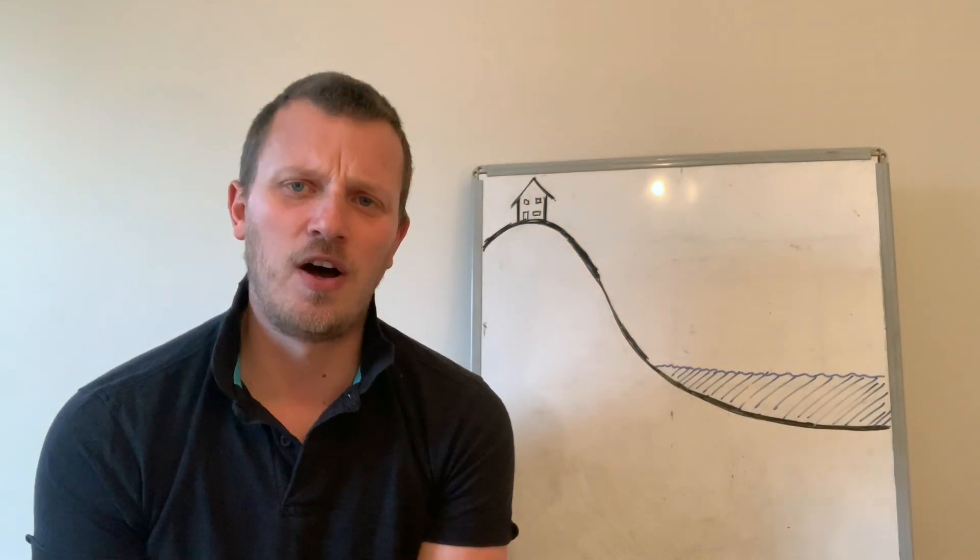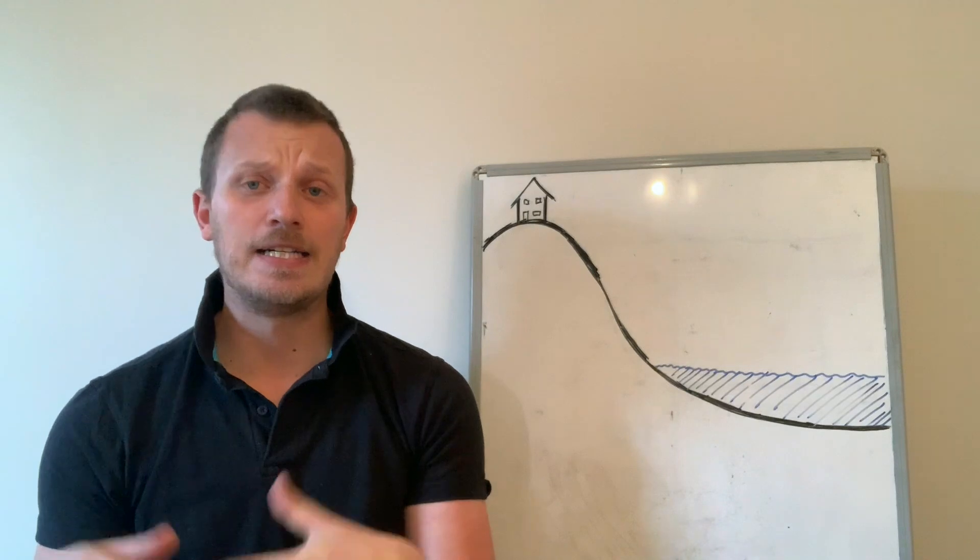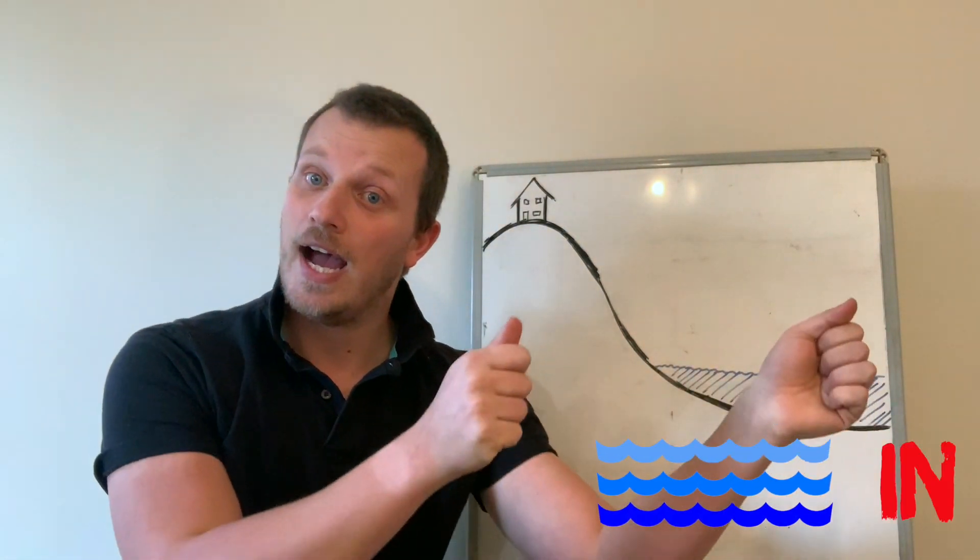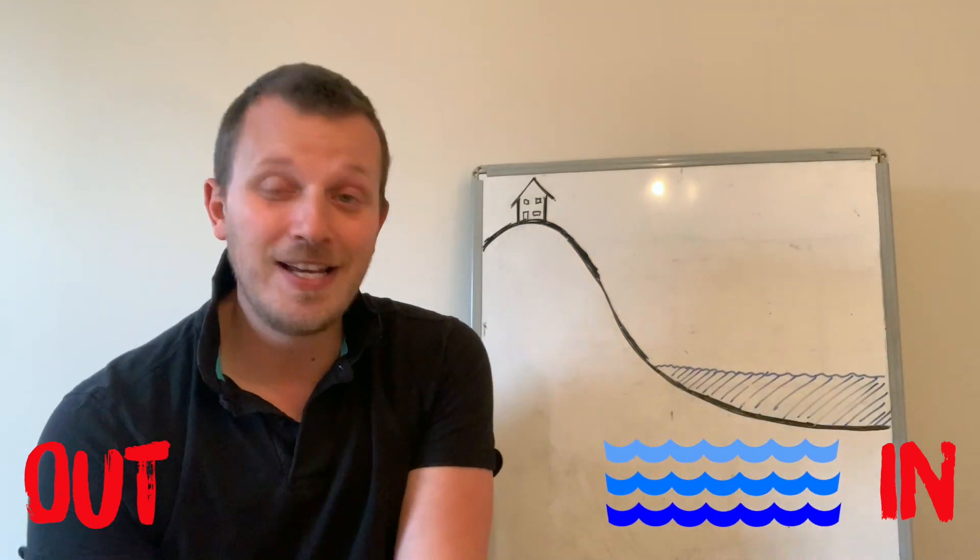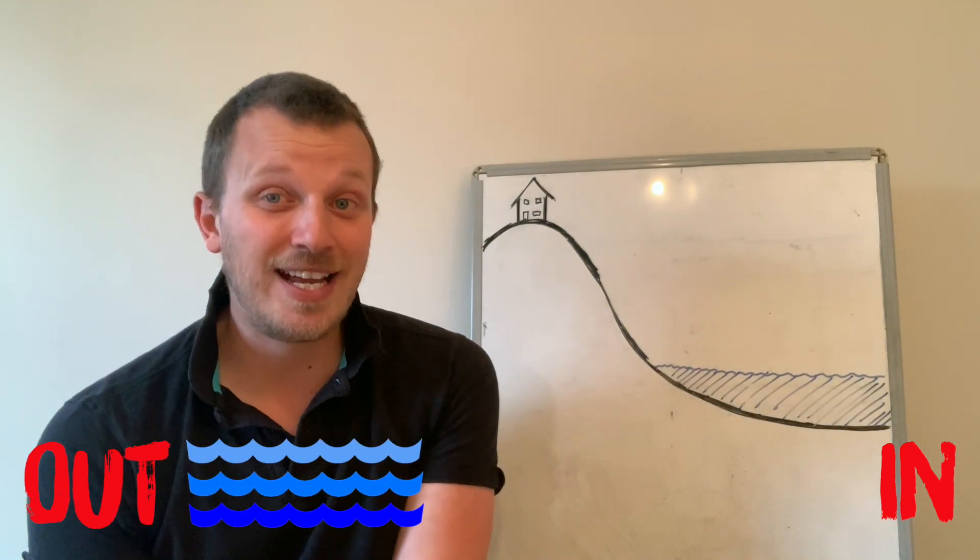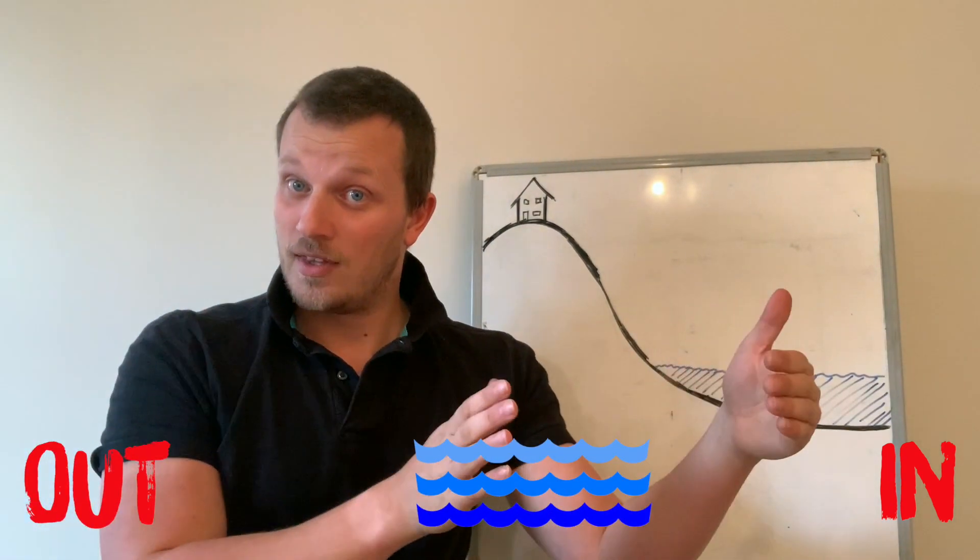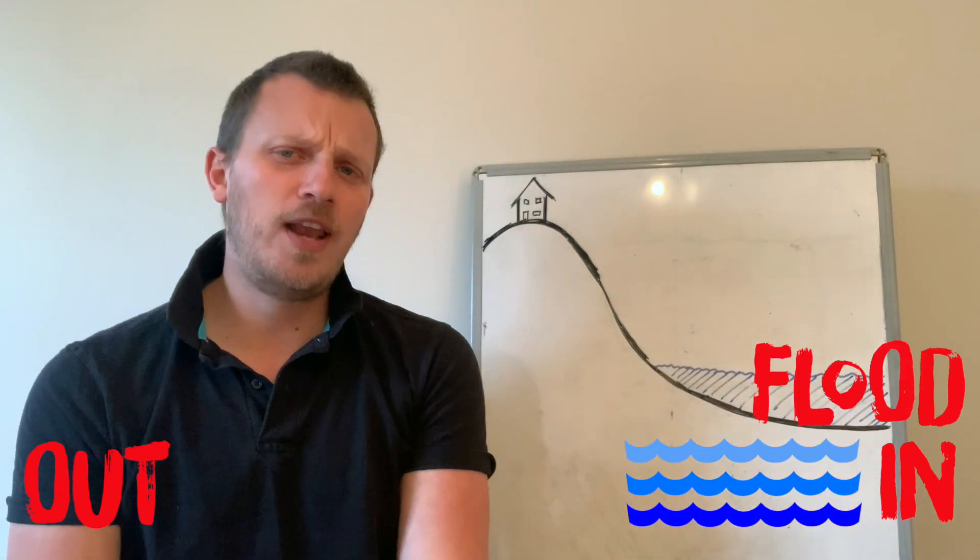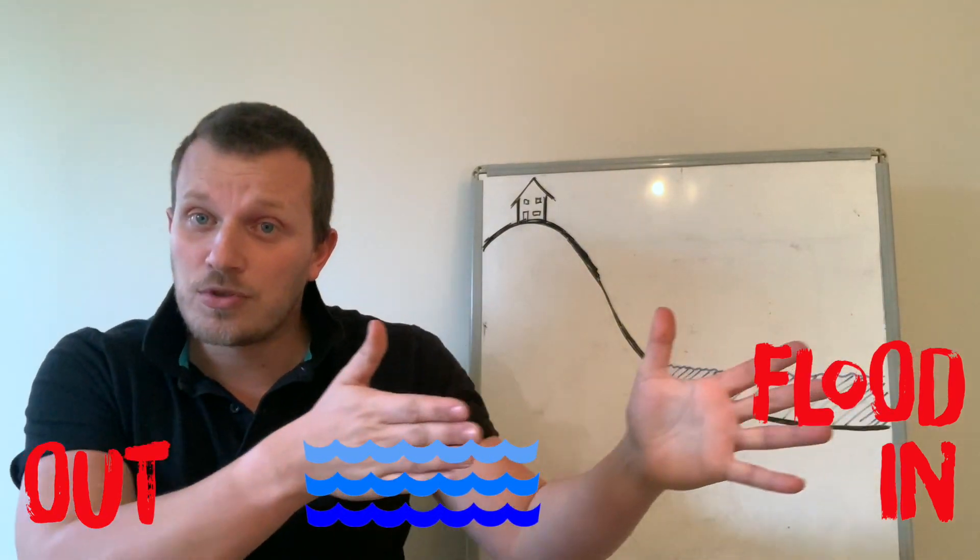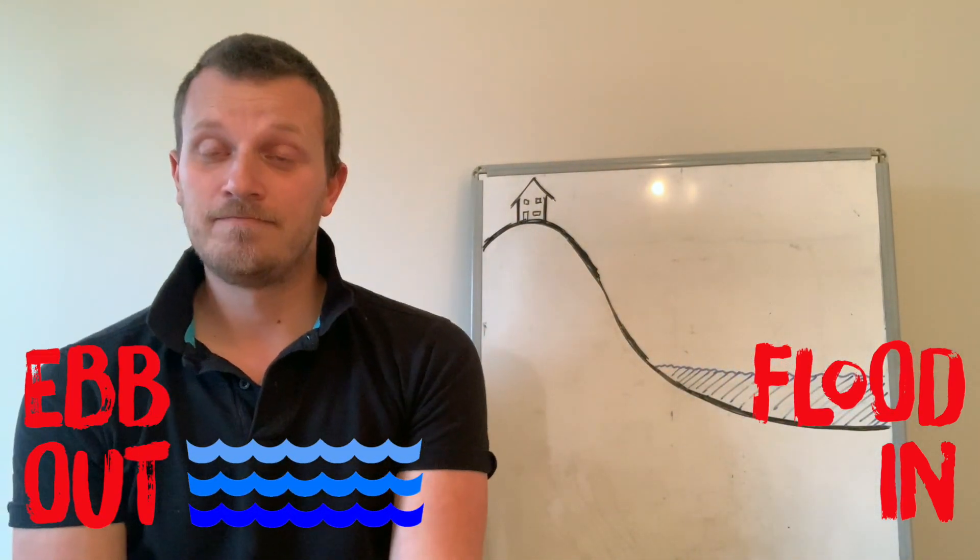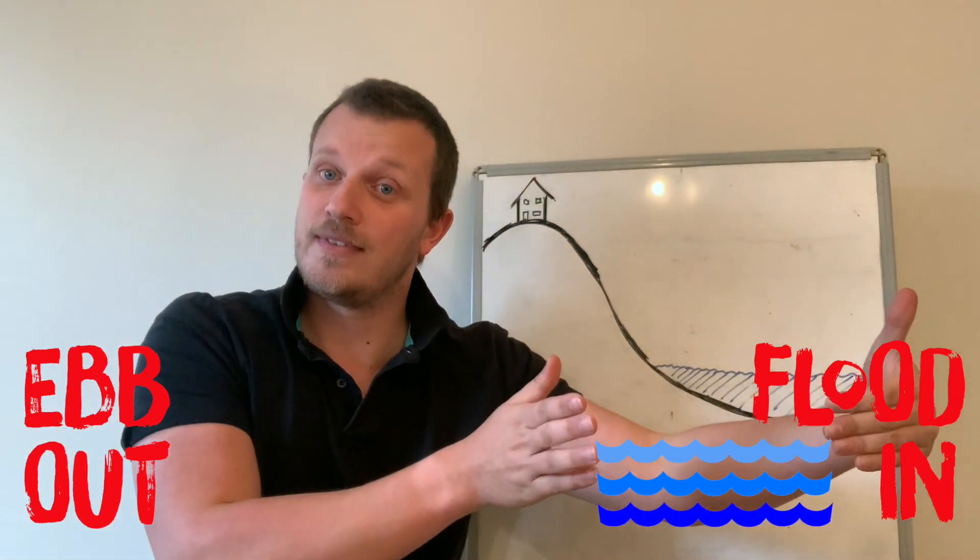What else do we need to know about tide? Well very simply, tide goes in and tide goes out, and if you can grasp that you're most of the way there to understanding what we need to know. When it goes in we call it a flood, a flood tide. When the water goes out we call that ebb, an ebbing tide.